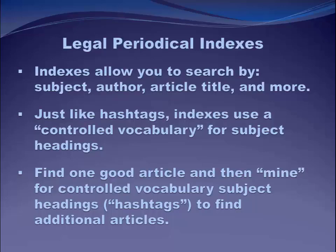If you're in a periodical index, you find one good article and then use the hashtags or subject headings assigned to that article to find more good articles. Examples for what we've been discussing today might be Title VII, sexual orientation, on the basis of sex, sex-based discrimination, LGBTQ discrimination, or some combination of those tags. Instead of doing a hashtag, I would put in "sexual orientation discrimination" as a controlled vocabulary subject heading and pull up all articles that have to do with that — whether they actually use my exact keyword terms or not — because a thinking person has read the article, assigned the heading, and said this is what this article is about. So if you find one good article, you can mine it.